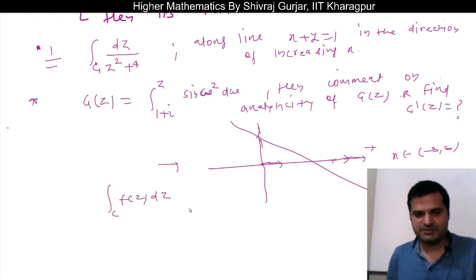If we see small f(z) here, small f(z) is what? 1 divided by z square plus 4. And we know that antiderivative... so small f(z) itself is analytic on the given curve.